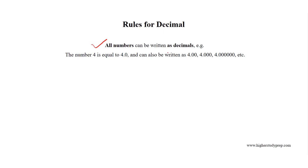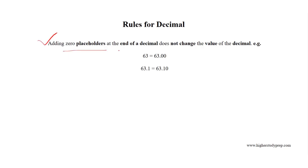All numbers can be written as decimals. For example, the number 4 is equal to 4.0, and it can also be written as 4.00, 4.000, etc. Adding zero placeholders at the end of a decimal does not change the value of a decimal. For example, 63 is equal to 63.00. Similarly, 63.1 equals 63.10 equals 63.100.